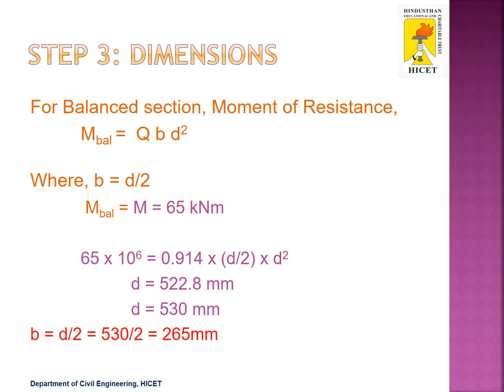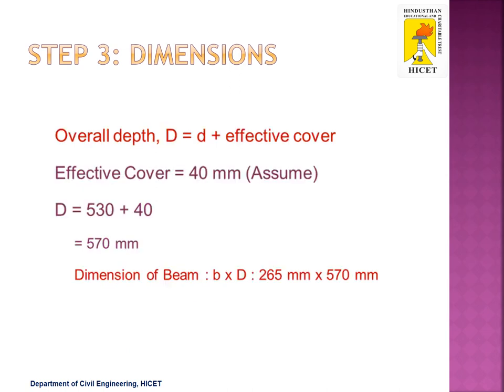As per the given data, the breadth B is half the effective depth, so B equals 530 divided by 2, giving 265 mm. The breadth of the beam section is 265 mm. For the overall depth, we add the effective cover to the effective depth. Assuming an effective cover of 40 mm, the overall depth D is 530 plus 40, which equals 570 mm. So the overall dimension of the beam section is 265 mm by 570 mm.